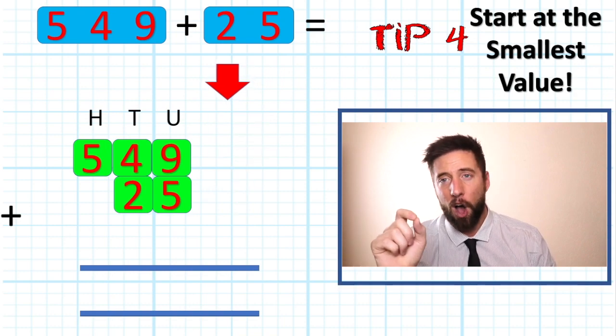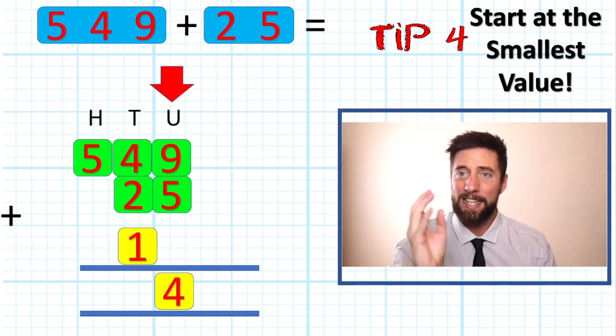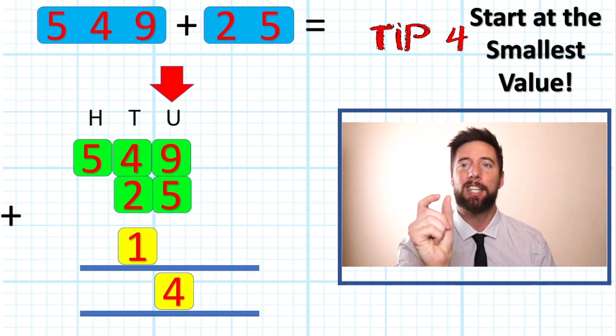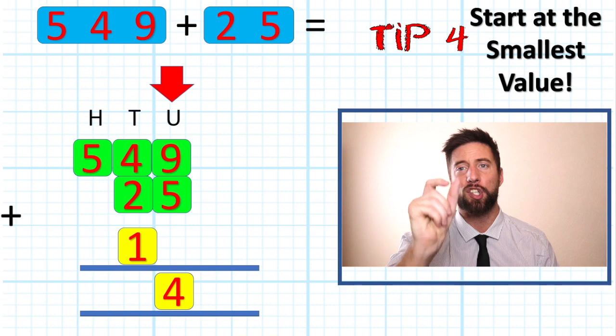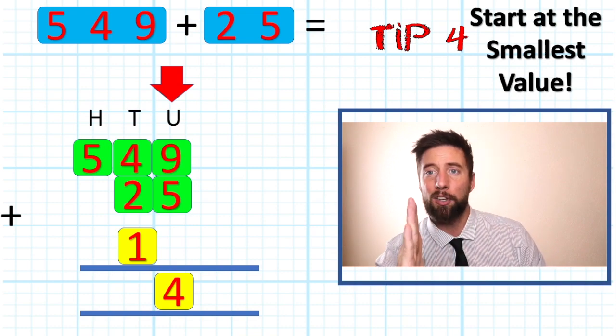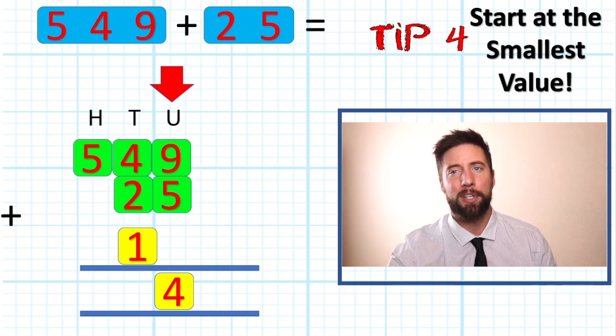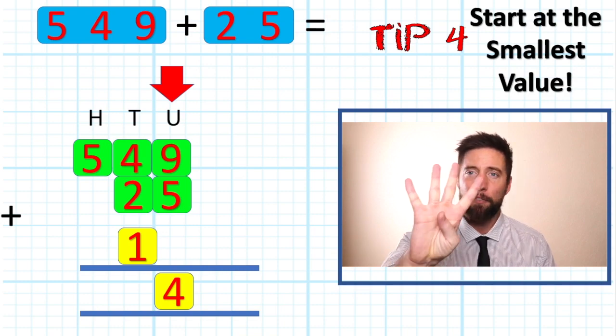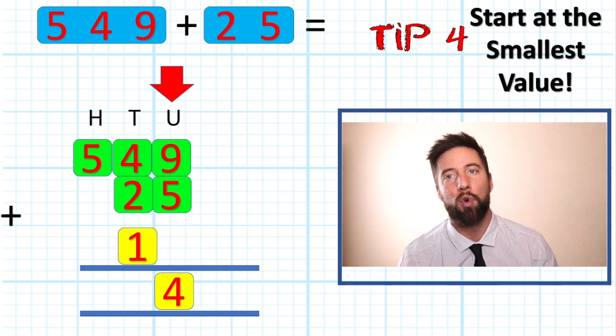if I have nine add five, giving me 14, which is a 10 and a four, I can still move my 10 into my 10s column because I haven't done that question yet. If I worked the other way and have done my 10s, I would get myself pretty confused when I end up with a 14 there at the end. So tip number four, always start in our smallest value.